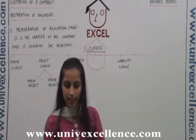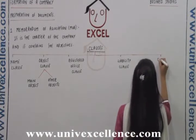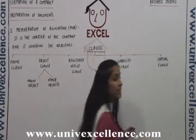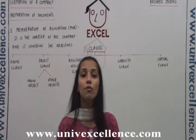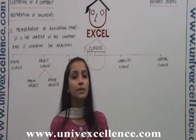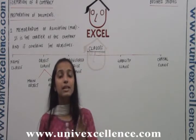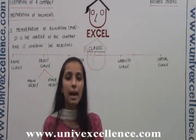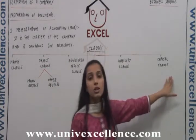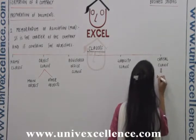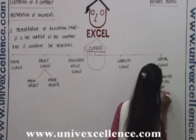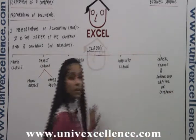And the last clause is the capital clause. It contains the details of the capital of the company — specifically the authorized capital. Authorized capital is the maximum capital up to which a company is authorized to issue capital. That is the capital clause.